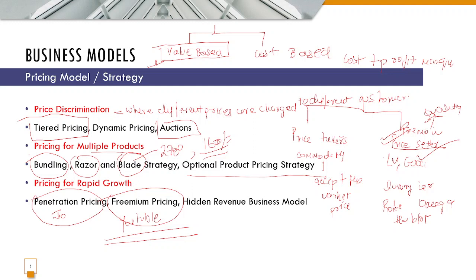The hidden business revenue model is where services offered by the business are free but revenue is generated from other services such as advertising. Disney Hotstar is a good example — it shows the cricket World Cup for free without requiring a subscription, but makes money through the advertisements viewers see while watching the match. Those advertisements are a source of revenue for Disney Hotstar. The basic service is free, but revenue is generated through advertising.